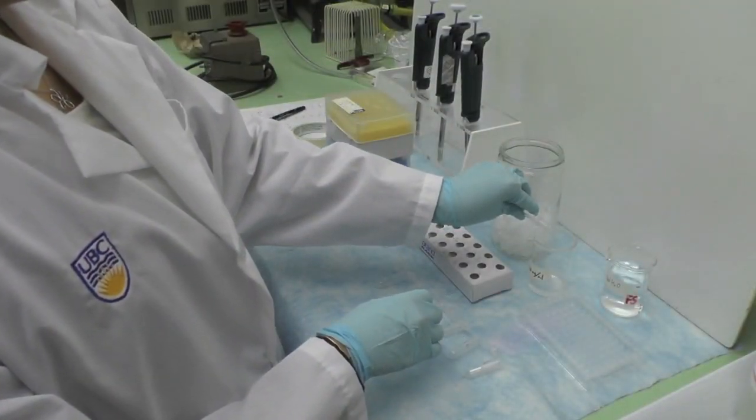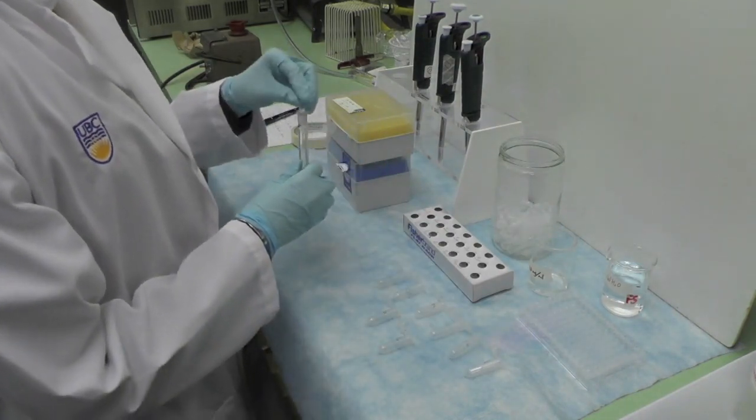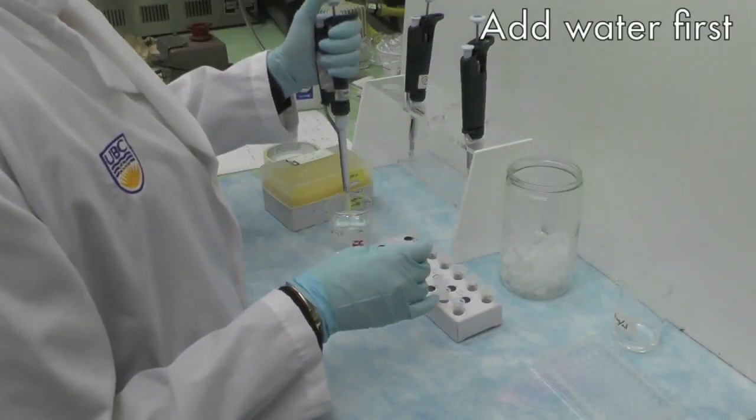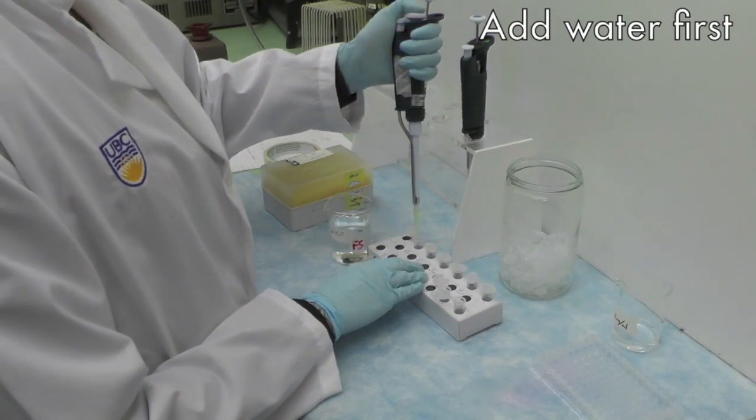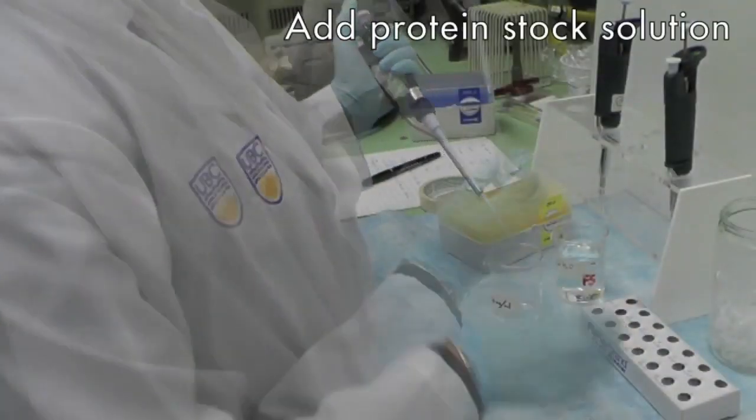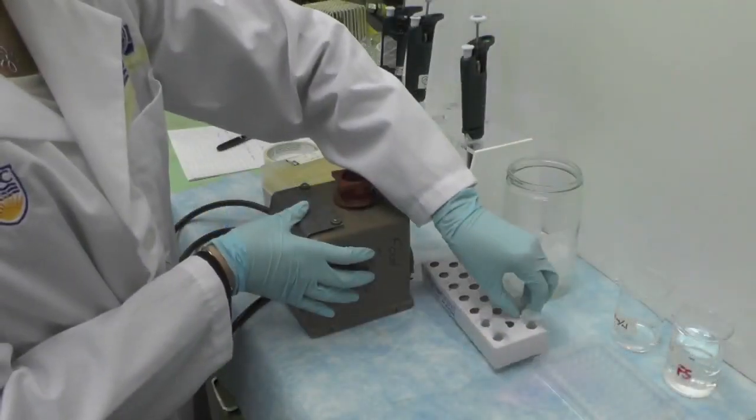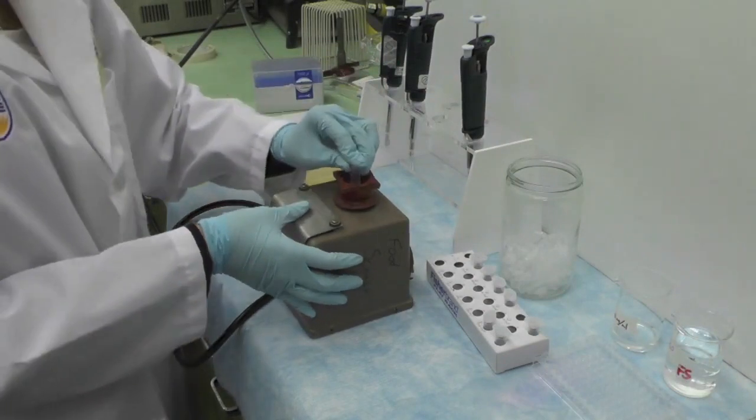Based on your pre-lab calculation targeting to make 100 microliters of each standard solution, first pipette the appropriate amount of DD water into the microfuge tube. Then add the proper volume of protein stock solution. Vortex the microfuge tube to mix the solution.